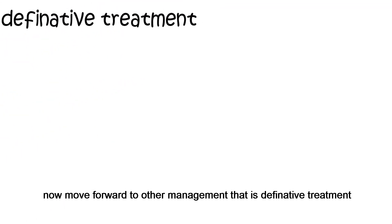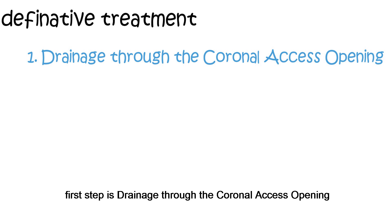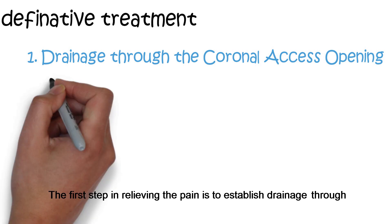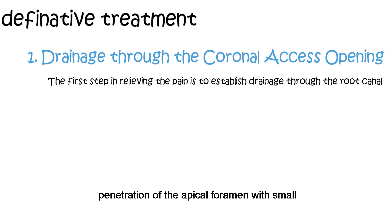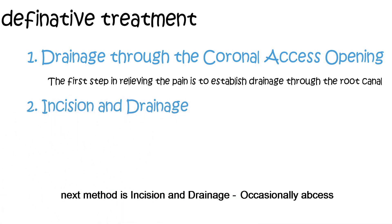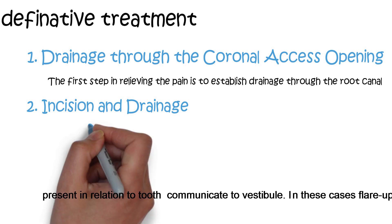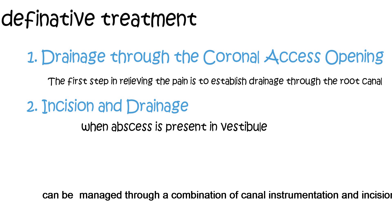Now moving forward to definitive treatment. The first step is drainage through the coronal access opening — the first step in relieving pain is to establish drainage through the root canal when it has not been obturated or is poorly obturated. Penetration of the apical foramen with a small file should be done to establish drainage. Occasionally, an abscess present in relation to the tooth communicates to the vestibule; in these cases, flare-ups can be managed through a combination of canal instrumentation and incision and drainage.